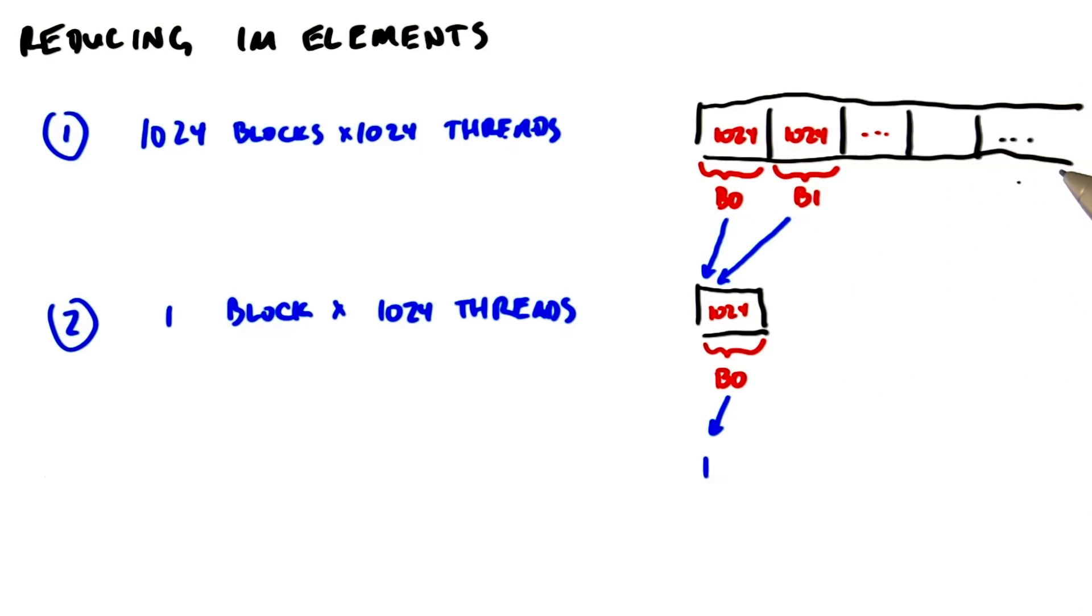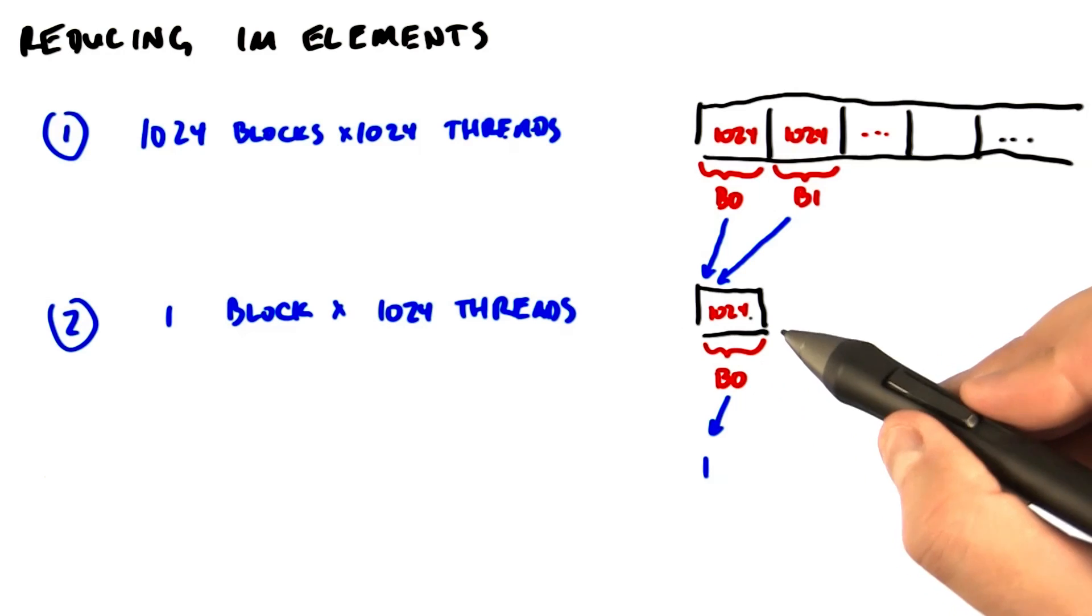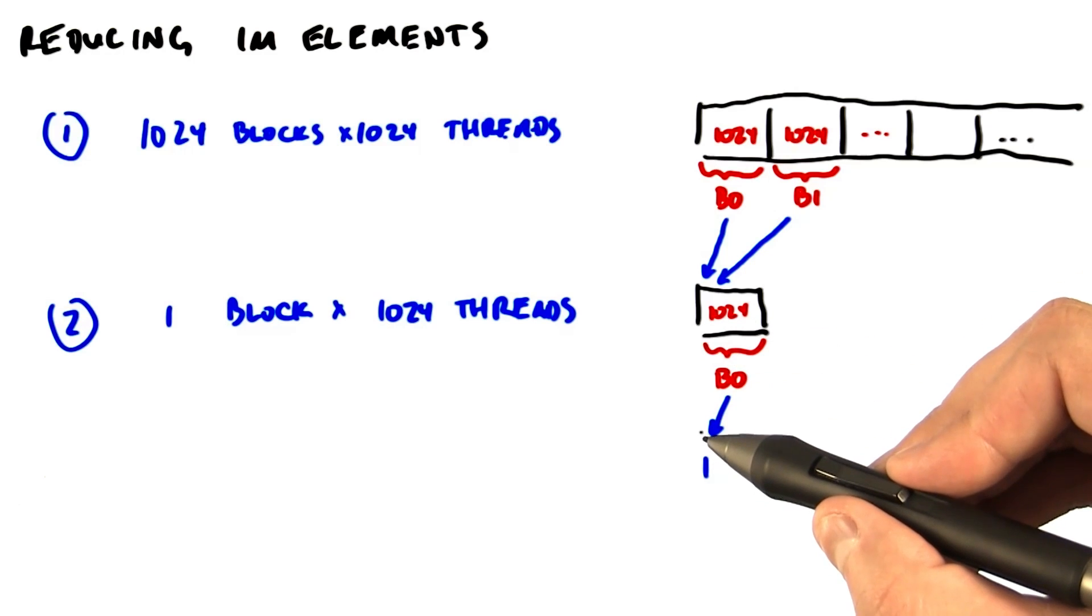Each of those will produce one single item, so we'll have 1,024 items left when we're done. Then we'll launch one block to reduce the final 1,024 elements into one single element.